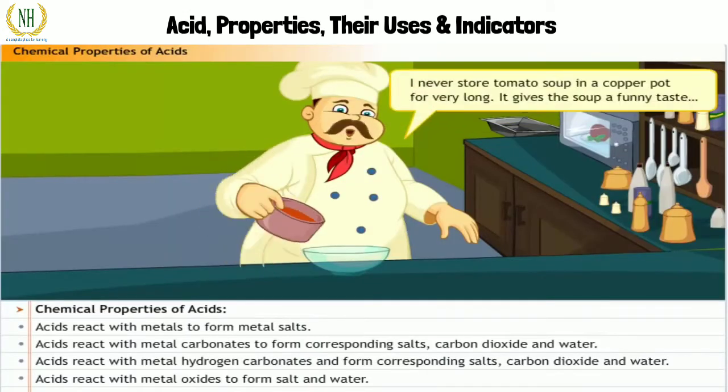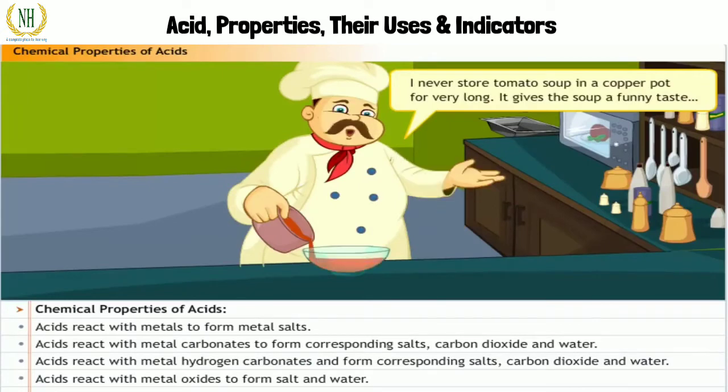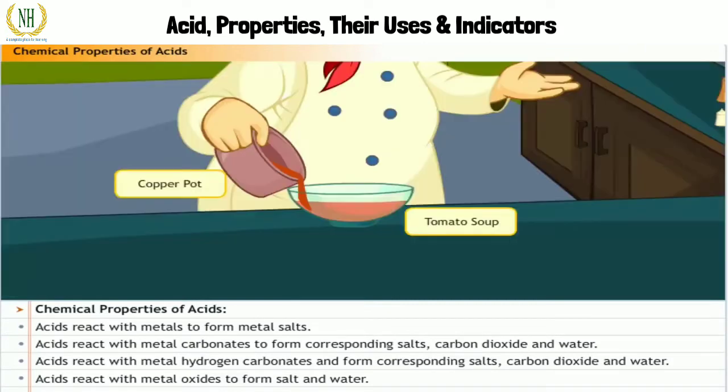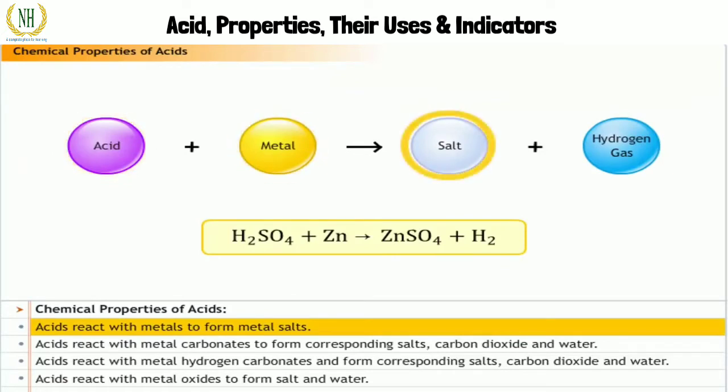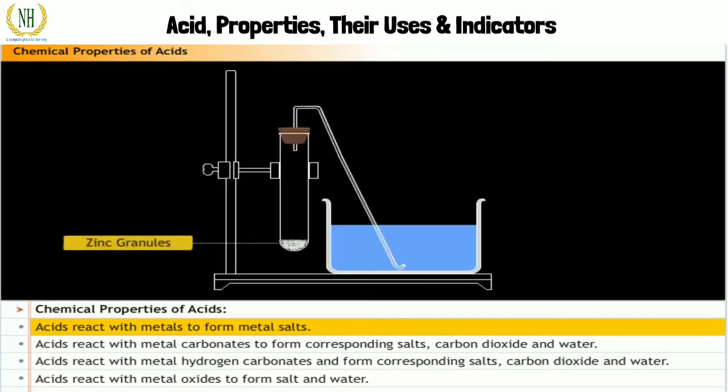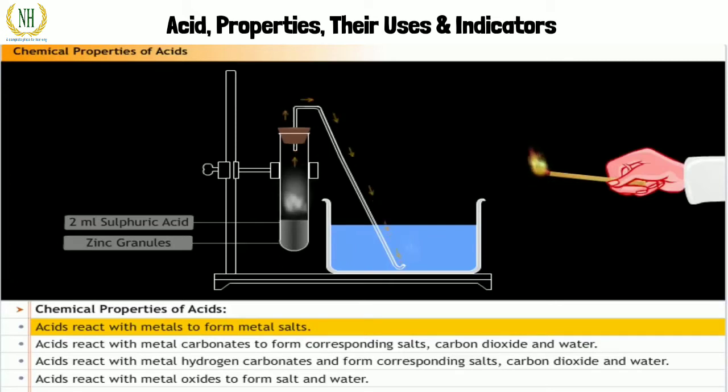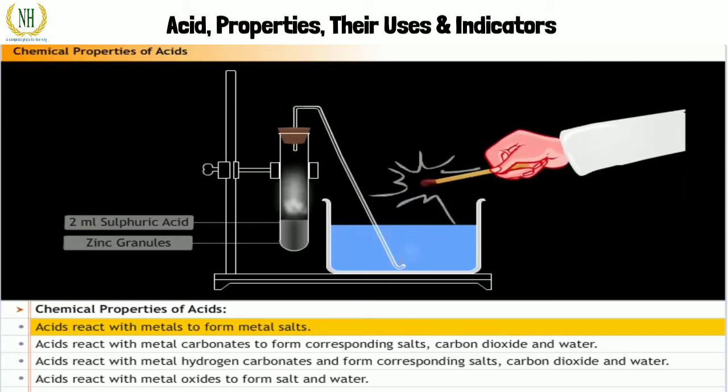I never store tomato soup in a copper pot for very long. It gives the soup a funny taste. Tomato soup being acidic reacts with copper, and that is what causes the change in its taste. Acids react with metals to form metal salts. In this reaction, hydrogen gas is liberated. Take a few granules of zinc in a test tube. Add two milliliters of sulfuric acid to it. You will find that a gas will be liberated. Bring a burning splinter close to the gas liberated. The splinter burns and a pop sound shows the presence of hydrogen.